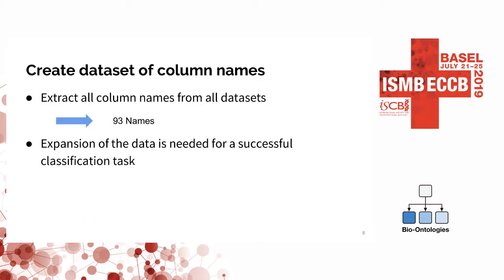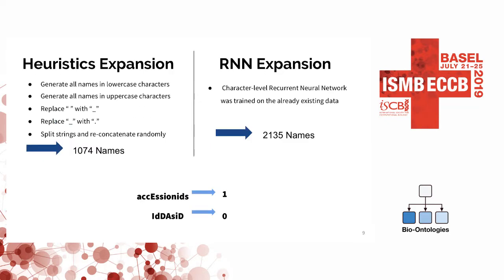Starting with the first methodology, we began by extracting all the possible column names from these datasets, but we only ended up with 93 names — not nearly enough for a successful classification task. So first we tried some easy heuristics, like generating all names in lowercase characters, uppercase, replacing spaces with underscores, underscores with dots, and splitting strings and re-concatenating them randomly. But this only resulted in over a thousand names, which was also not enough.